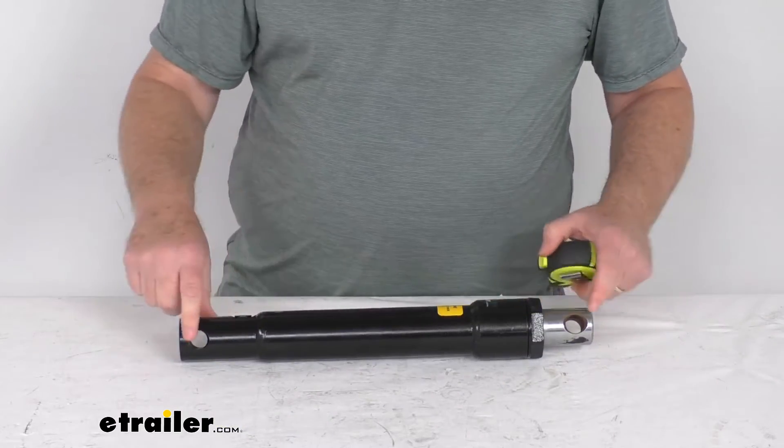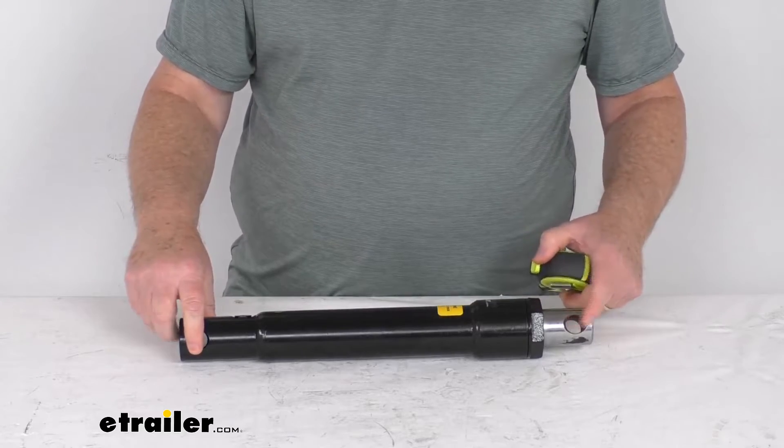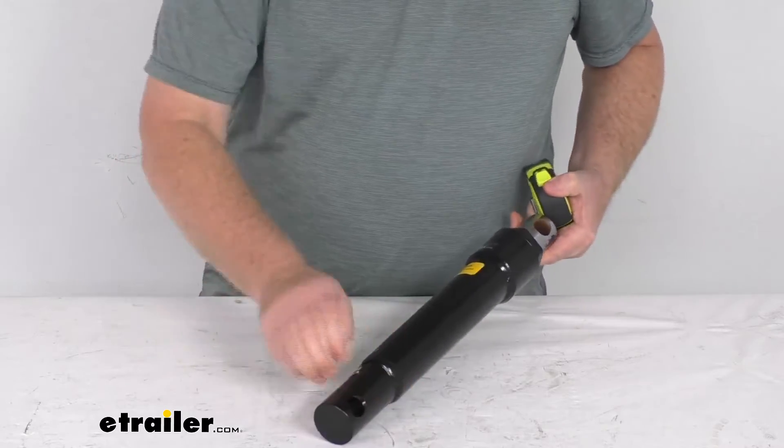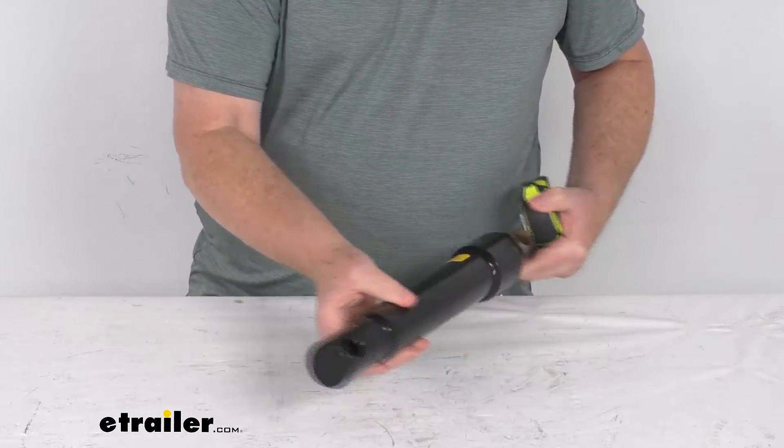The pinhole diameter on each end is 3/4 of an inch. The rod diameter is going to be 1 and 1/2 inches, and the base diameter on the other end is 1 and 3/4 inches.